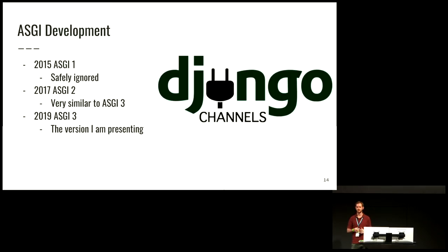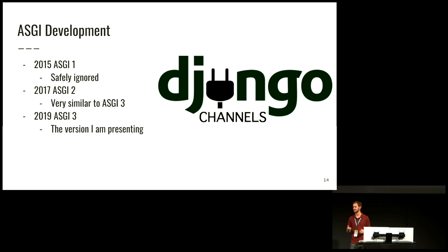Just to give you an idea of the development of ASGI: it came about through Django Channels development, with the ultimate aim of making Django async. The first version of ASGI separated the server and application by process — it was quite complicated, and you can thankfully just ignore it. If you find anything referencing ASGI 1, forget about it. Then there's ASGI 2 and ASGI 3, which are very similar. ASGI 3 is a bit simpler and cleaned up, and I'm only going to talk about ASGI 3.